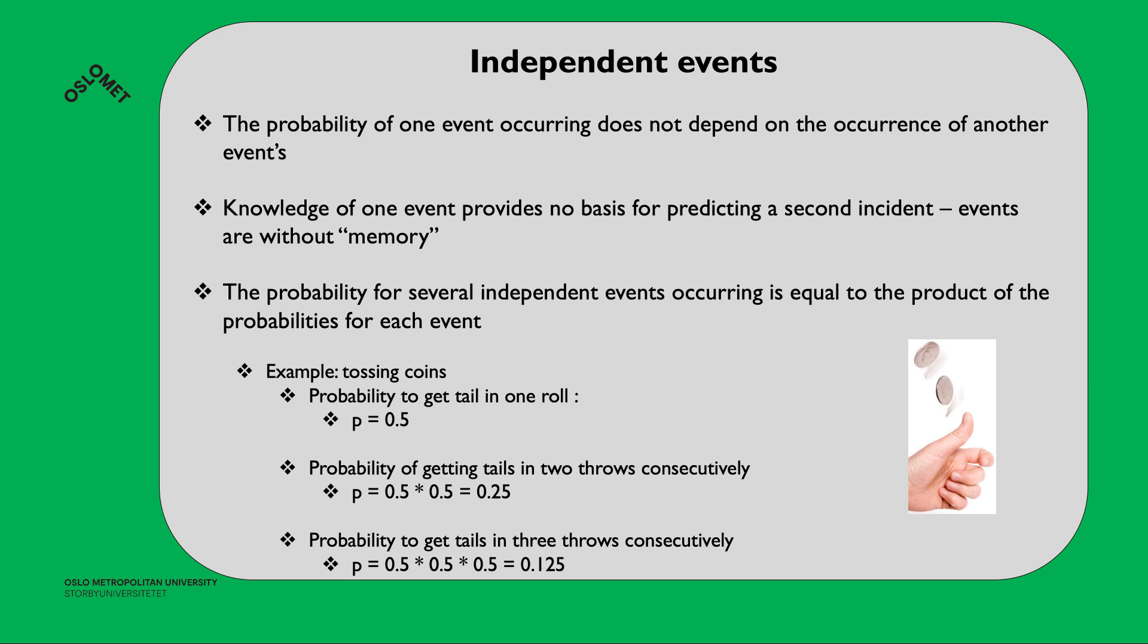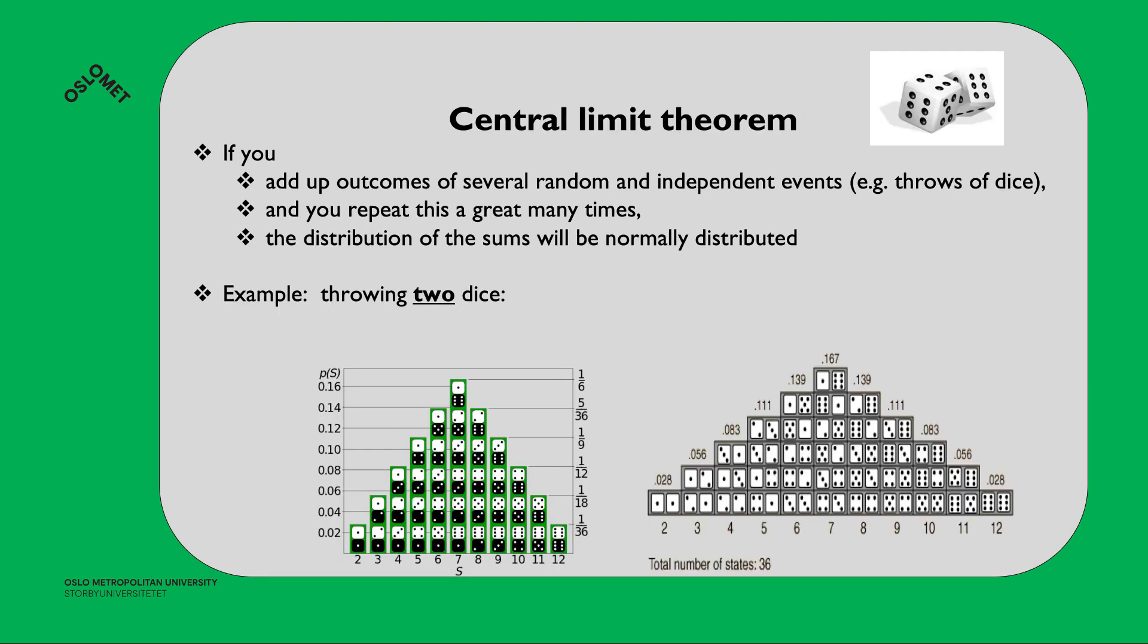This all leads up to the central limit theorem. If you add up the outcomes of several random and independent events, for example throwing of a dice, and you repeat this a great many times, the distribution of the sums will be normally distributed. For example, if you are throwing two dice and you sum up the distribution, then you will go towards normal distribution.